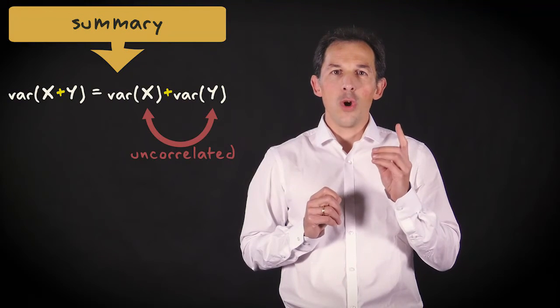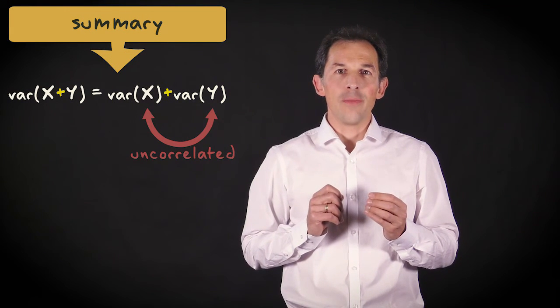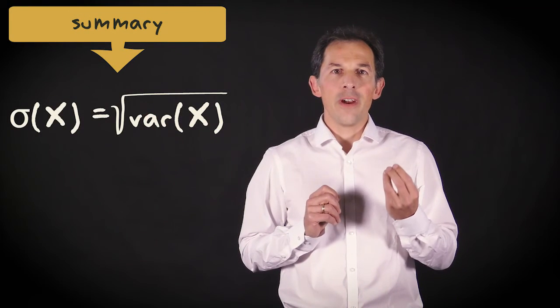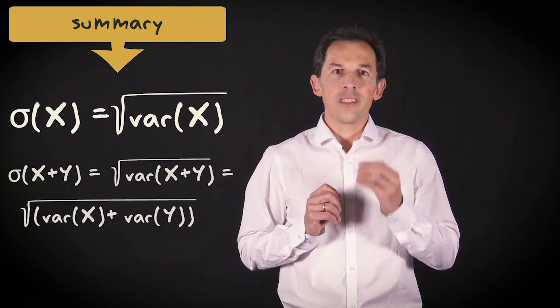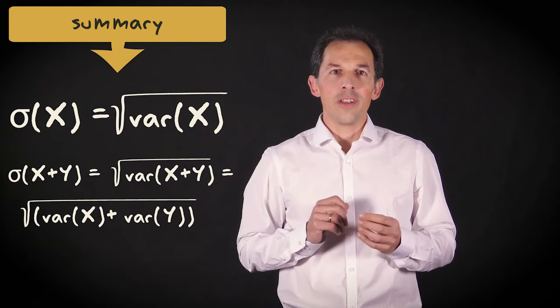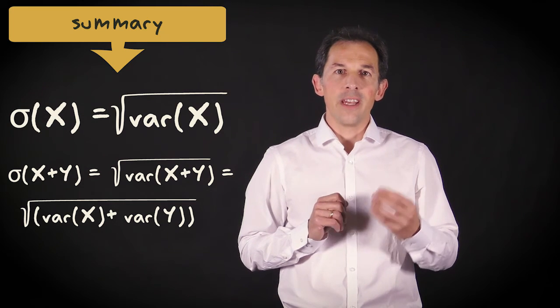The variance of several uncorrelated random variables that are added or subtracted is the sum of their variances. Mind you, this only applies to uncorrelated random variables. The standard deviation is the square root of the variance. So to get the standard deviation after manipulating a random variable, you first determine the adjusted variance and then take the square root.